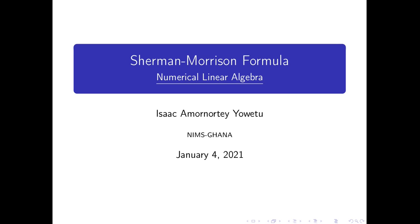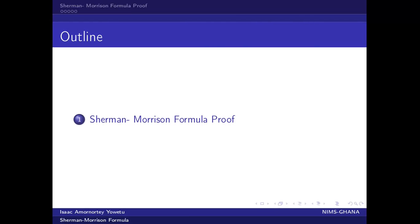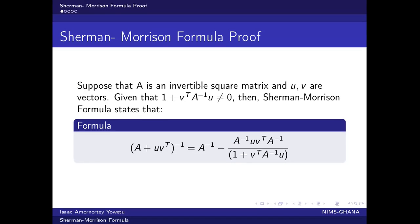Hello friends, once again I have an interesting concept which we'll look at, which is the Sherman-Morrison formula proof in numerical linear algebra. Let's get into it. This formula says suppose that A is an invertible square matrix.